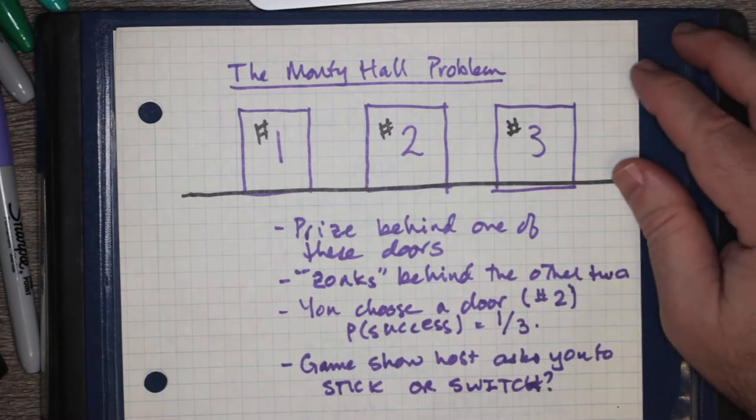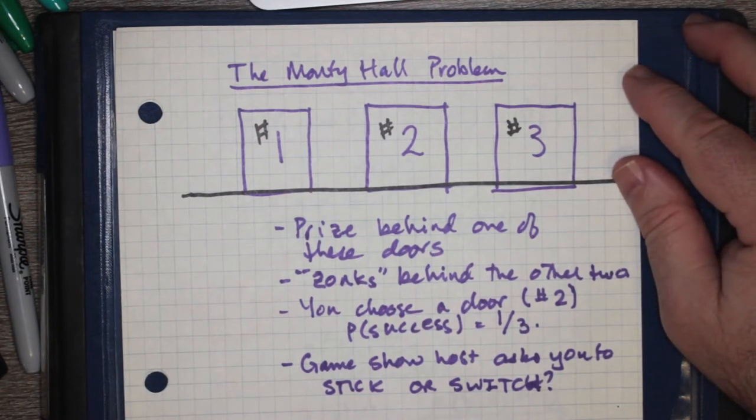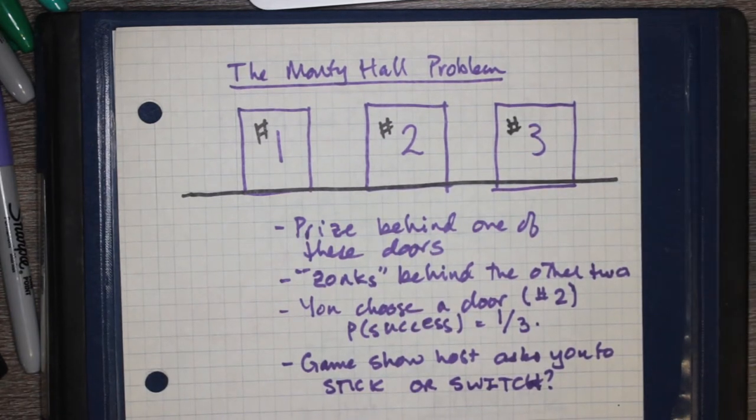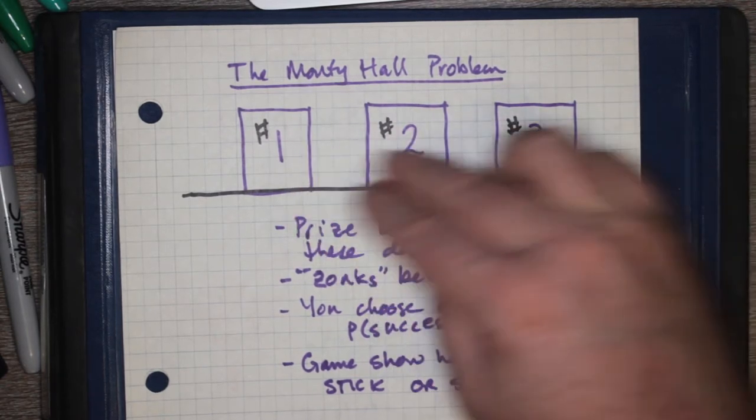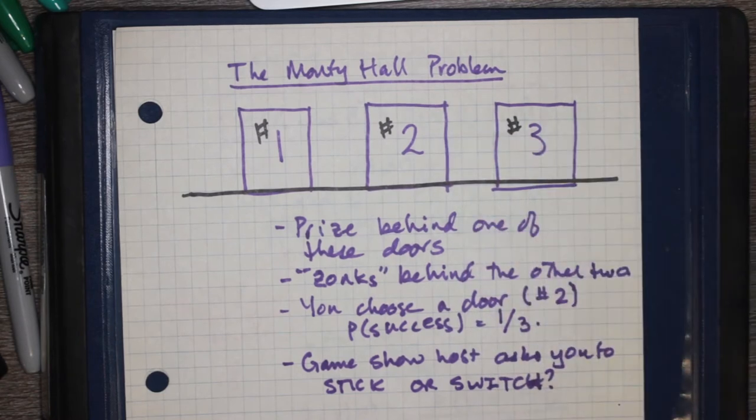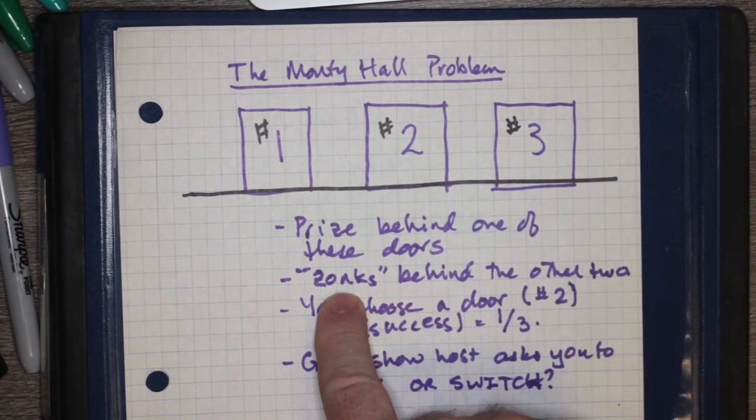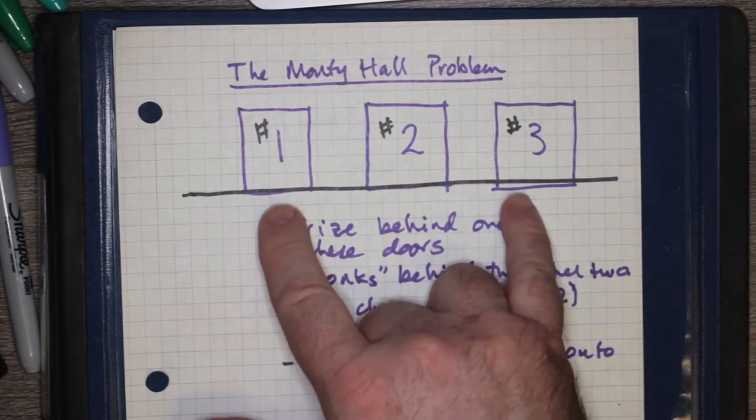Sometimes it's a car, sometimes it's an expensive vacation or just some exotic location, and the other two doors had what they call zonks. They had zonks, which meant that they were just hilarious prizes that there's no way you're going to take it home.